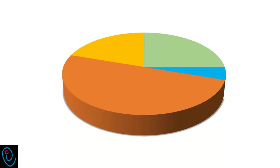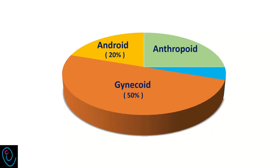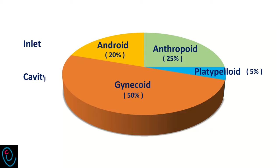There are four types of female pelvis: gynecoid, android, anthropoid, and a rare type known as platypelloid pelvis. I will describe each type in terms of inlet, cavity, and outlet, with a comparison of the four types at the end.